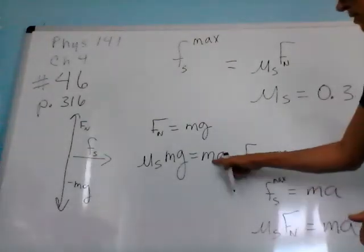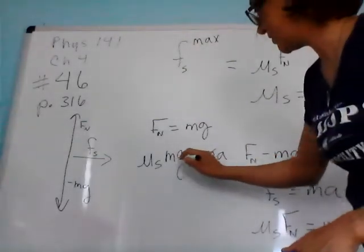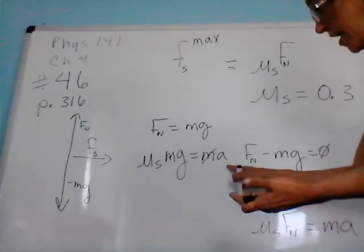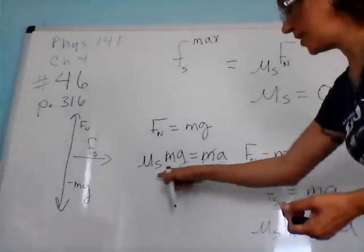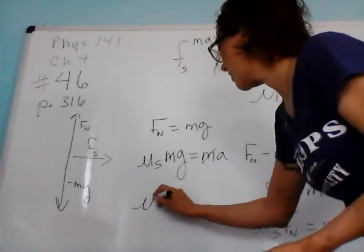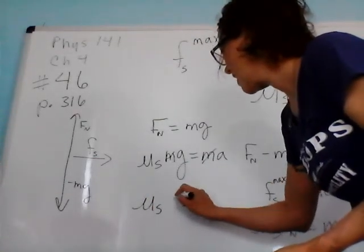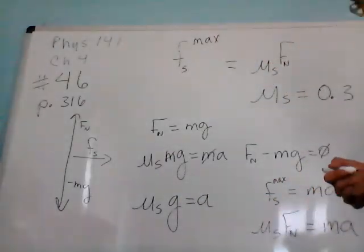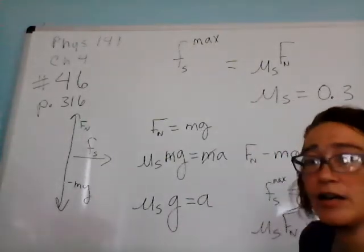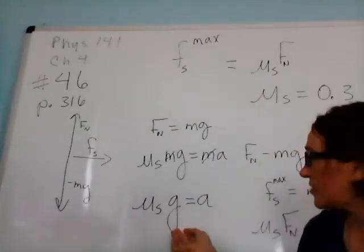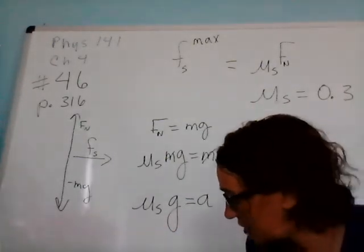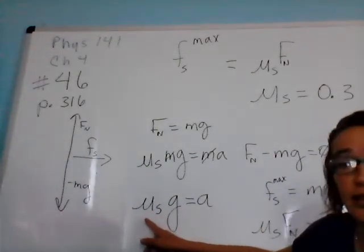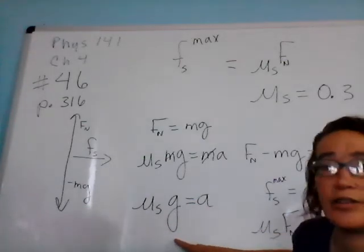At this point, we can eliminate mass from both sides. So that tells us that the maximum acceleration we can have before we break that static frictional force is going to equal that coefficient of static friction times gravity, and that's going to equal our acceleration. This tells you that if you're on a level surface, that static frictional force and its relationship to how much acceleration it can handle is related to two things: how sticky are these surfaces, and what planet you're on.